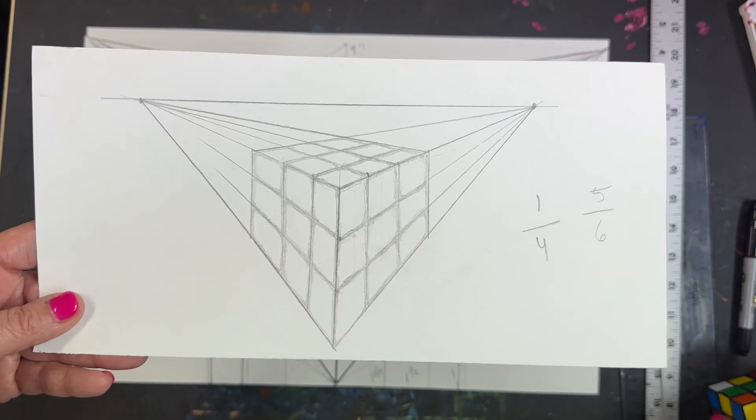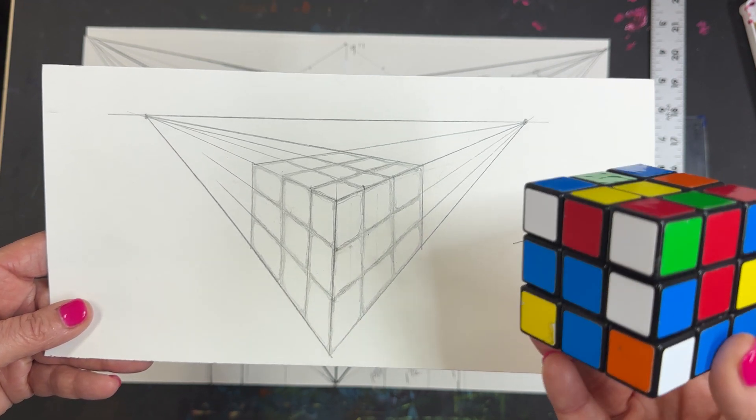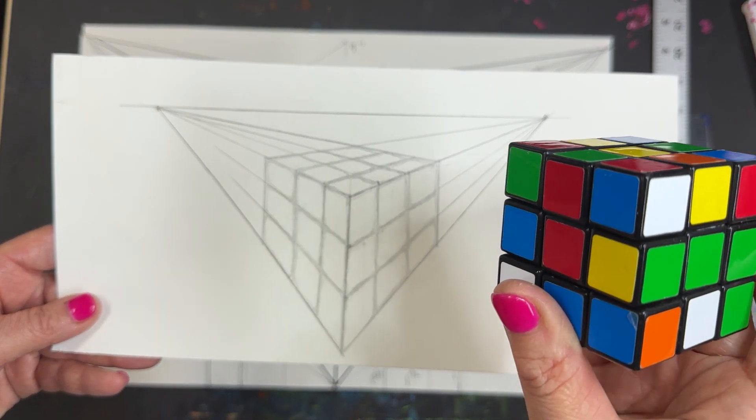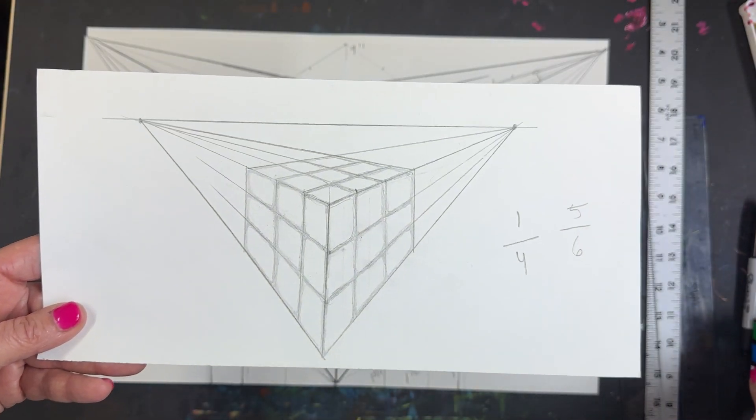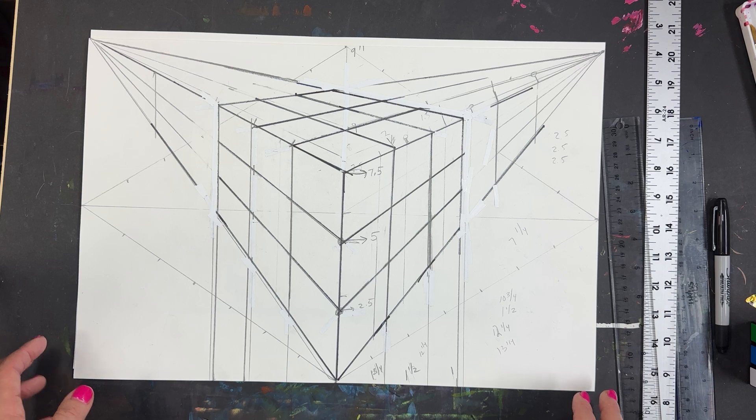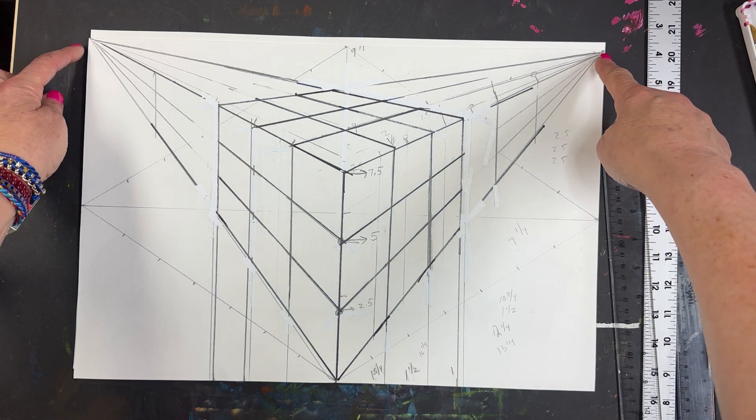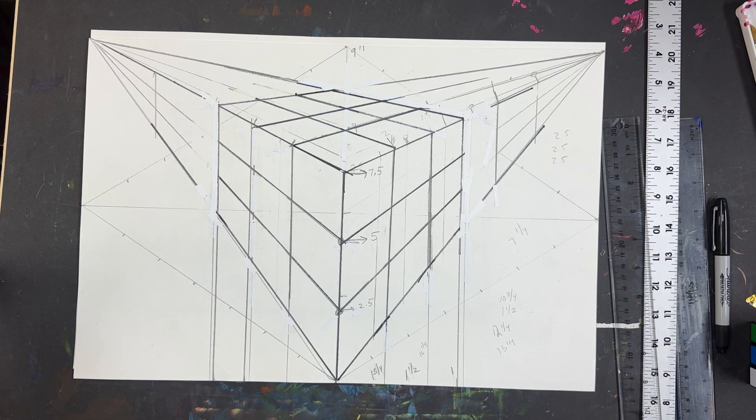All right, what we're going to do is draw a Rubik's Cube in two-point perspective, basically looking at the Rubik's Cube from a corner. This was the first version, the prototype. It's on 12 by 18 paper, and you're going to be using a ruler and pencil and two vanishing points in the corner. You don't even need to draw them, it's just going to be the corner of the paper to draw your Rubik's Cube.